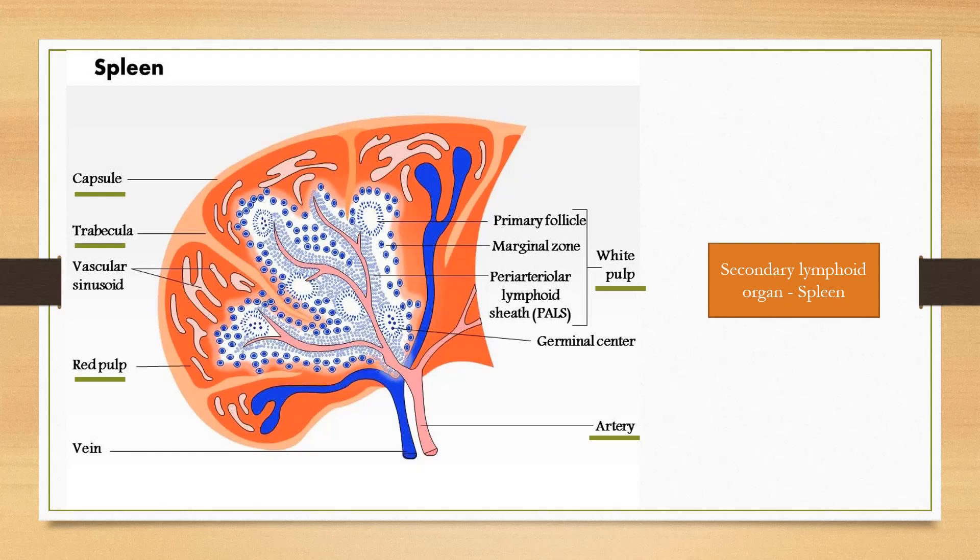The white pulp surrounds the splenic artery, called periarteriolar lymphoid sheath, which is enriched with T cells. Outside periarteriolar lymphoid sheath, marginal zone is present, which contains the primary follicles and which is enriched with B cells. On antigenic stimulation, B cells secrete antibodies and kill the antigen.